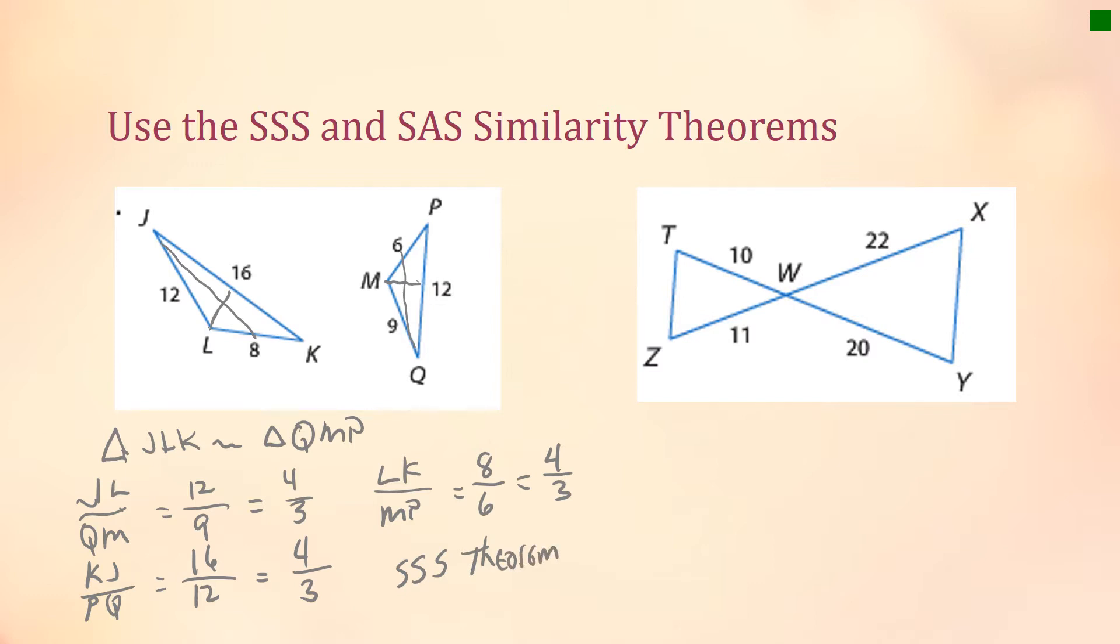Let's look at this second set of triangles here. If I look at angle W and angle W right here, those are going to be congruent because they are vertical angles. I've got two sides and an included angle here to consider.